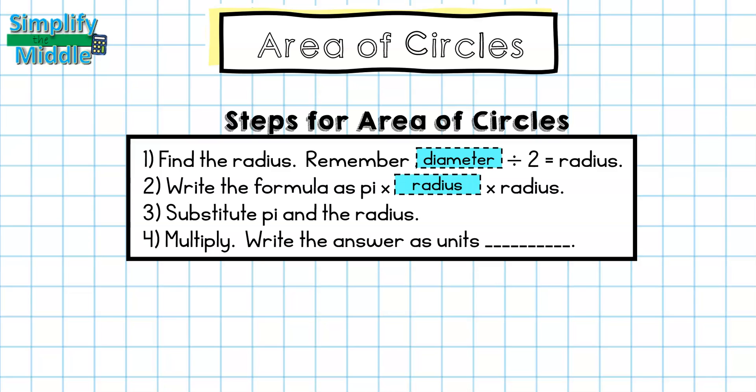And as you get more comfortable with that step, you do not always have to write that, but it always helps me remember that I am multiplying the radius by itself. Step 3 is to substitute pi and the radius. And Step 4 is to multiply. Don't forget to write your answers as units squared.